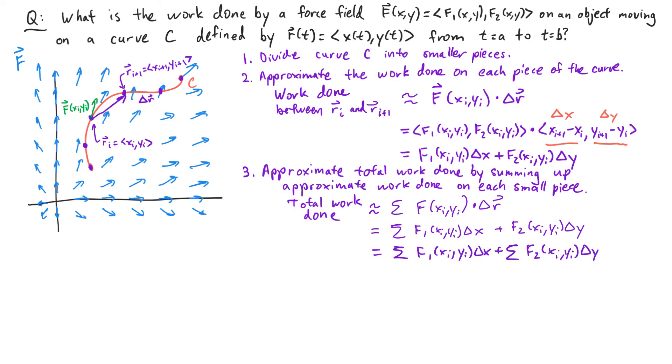If we divide up the curve c into smaller and smaller pieces, the approximation is going to get more and more accurate. So our last step is to take the limit as the magnitude of delta r goes to zero to get the exact amount of work done.